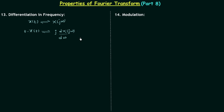We can generalize this for t raised to power n multiplied to x(t). Whenever we multiply t^n to x(t), the differentiation of X(jω) with respect to ω will occur n times and j raised to power n will get multiplied to the differentiation. This is the final property and now we will prove it.